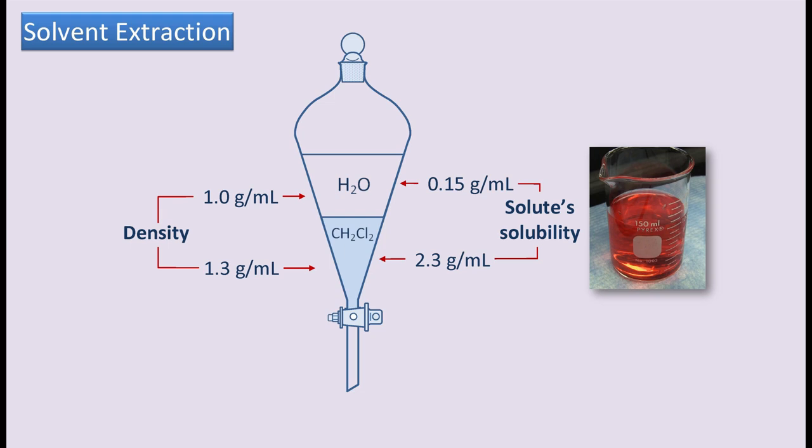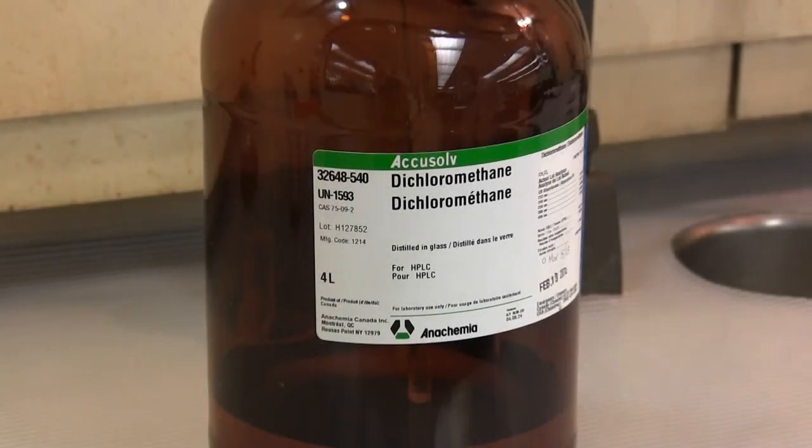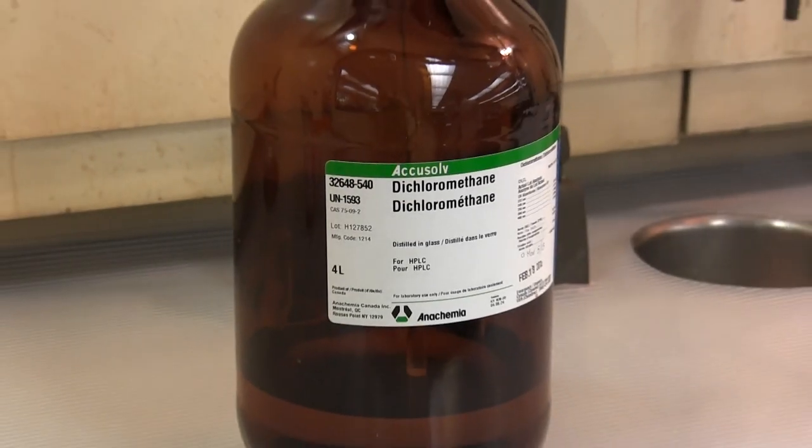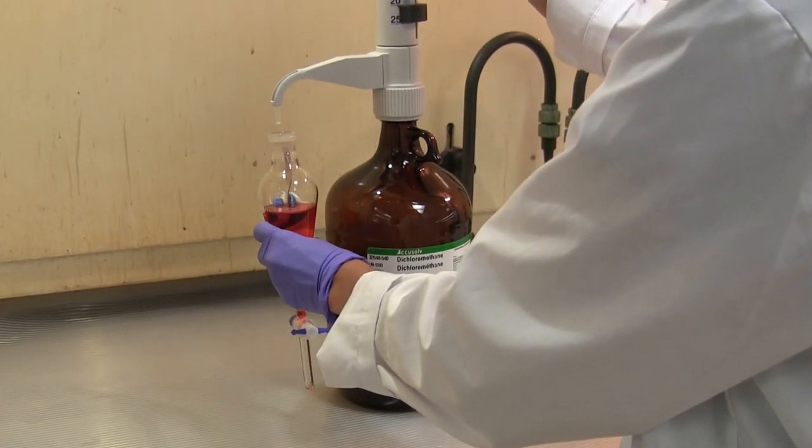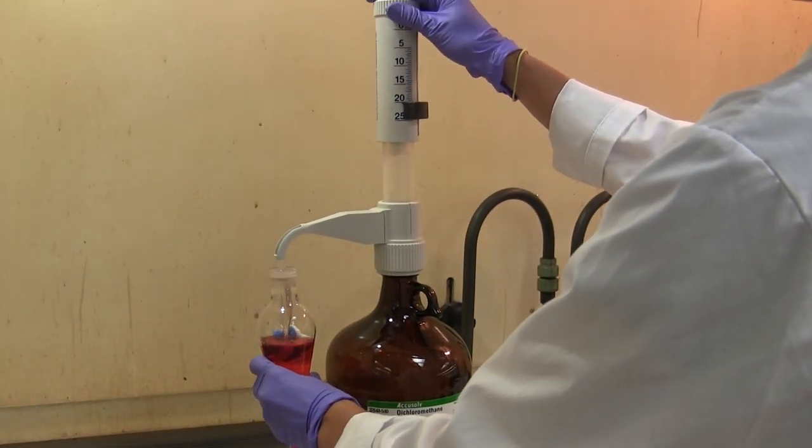Indeed, it is good practice and prudent to always check the densities of solvents used in solvent extraction so that we know which layer is on top and which layer is on the bottom. So we begin the extraction process by adding the required amount of dichloromethane to the aqueous solution in the sep funnel.